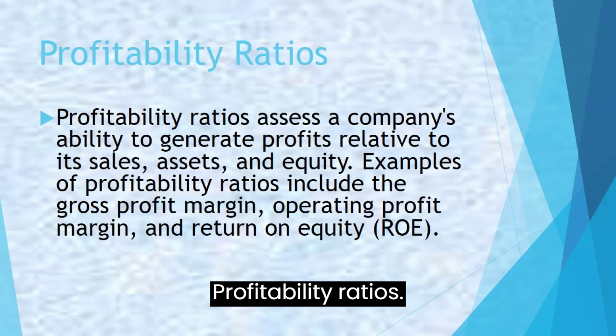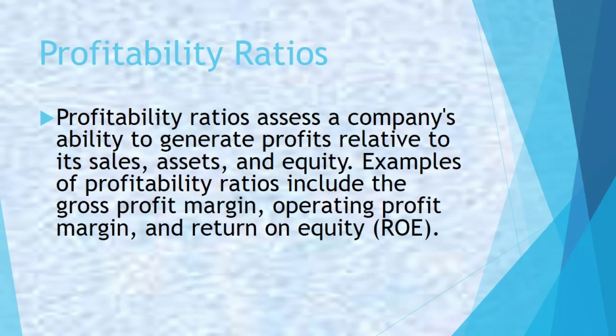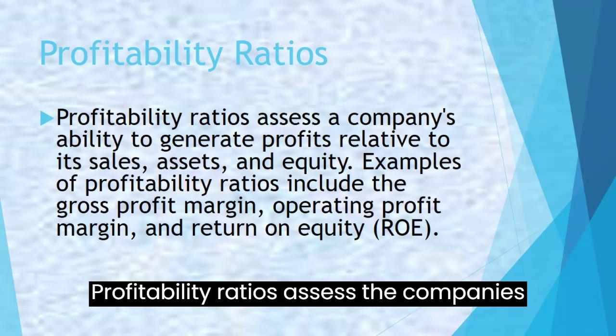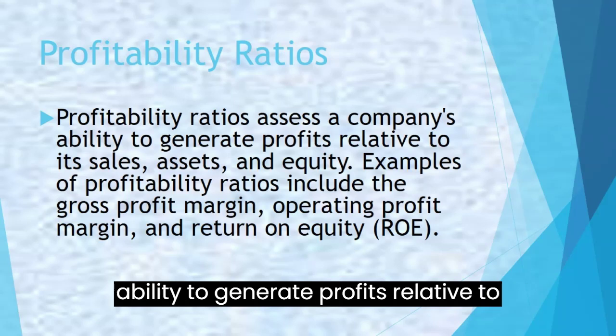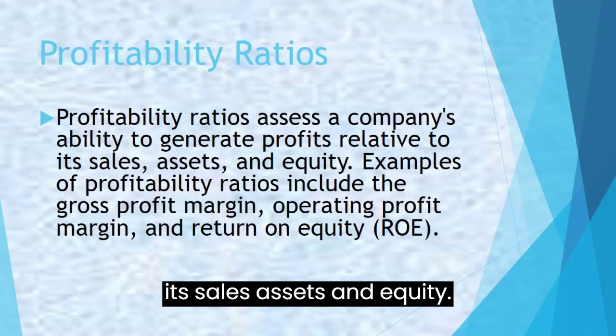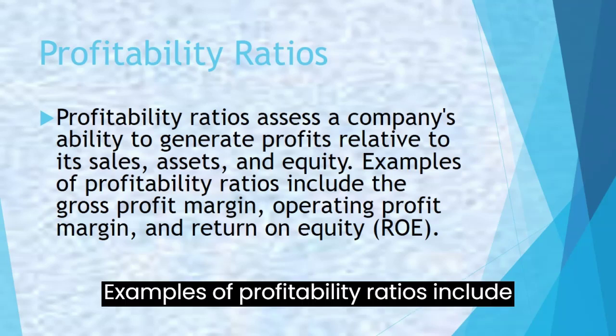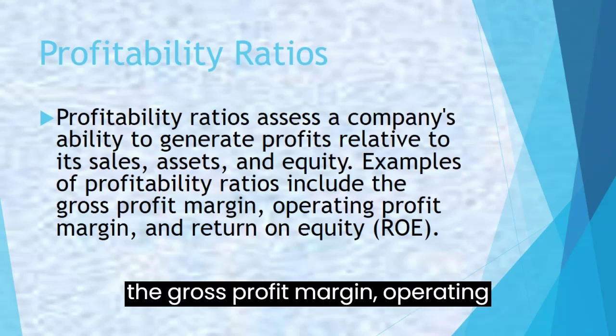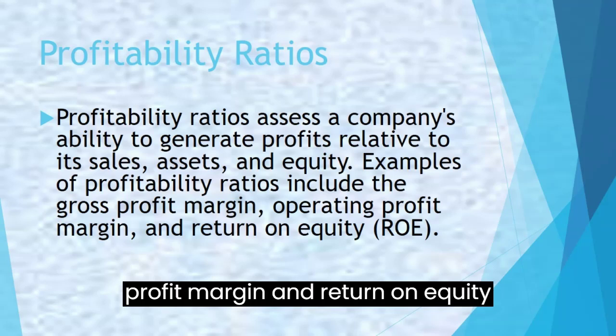Profitability ratios assess a company's ability to generate profits relative to its sales, assets, and equity. Examples of profitability ratios include the gross profit margin, operating profit margin, and return on equity (ROE).